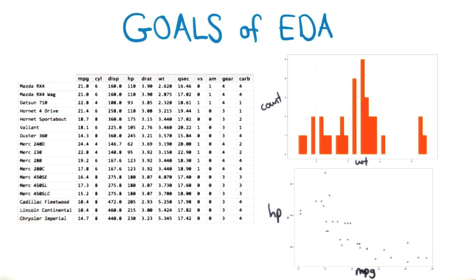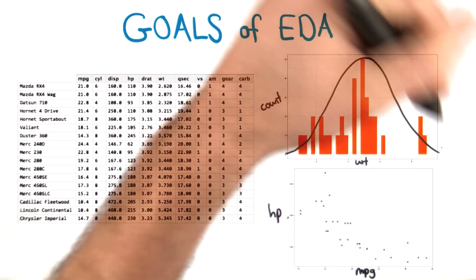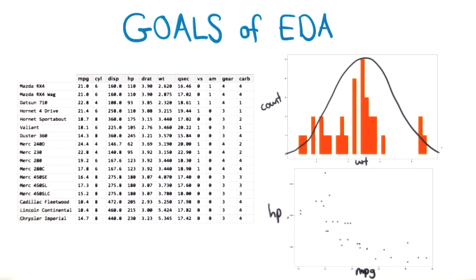Our second goal is to assess and validate assumptions on which future inferences will be based. So we might ask questions like, which variables are normally distributed? Or we might be wondering whether or not a variable is biased towards a particular value. Now, this might not be the case for our cars dataset, but certainly in other cases, like with social behavior or users interacting on the web, you might find that.